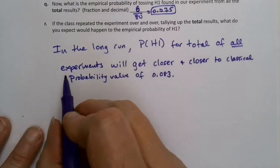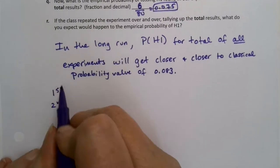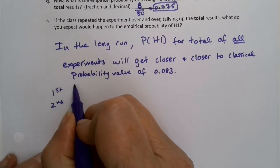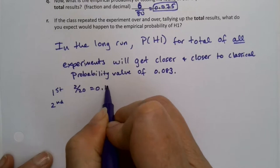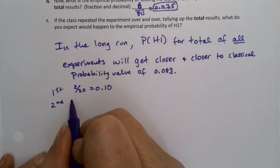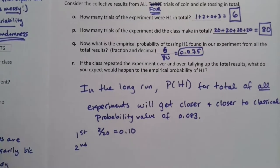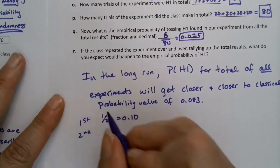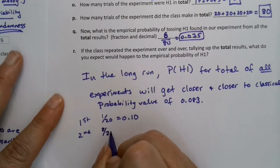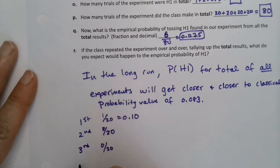Let's actually see it for our particular problem. We had four trials. The first trial was 1 out of 20. The second trial was 2 out of 20. The third trial was 0 out of 20. The fourth trial was 3 out of 20.